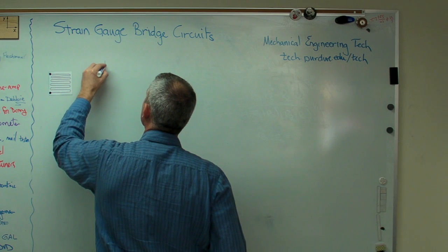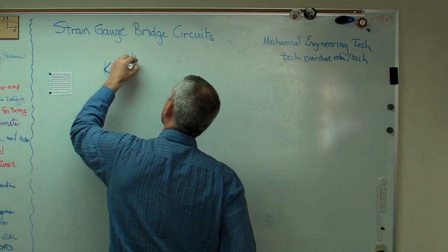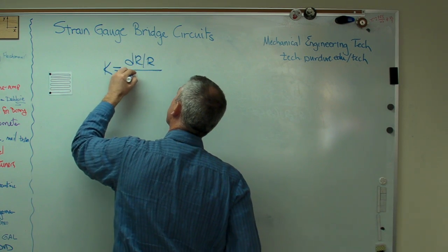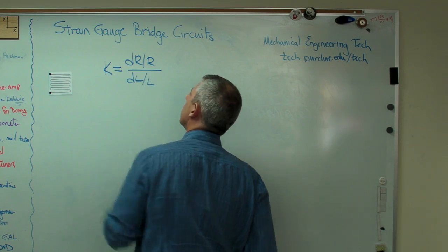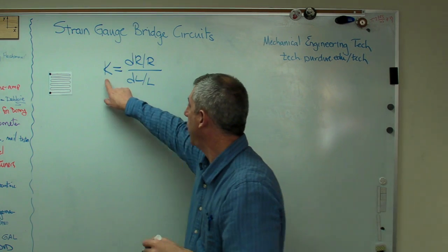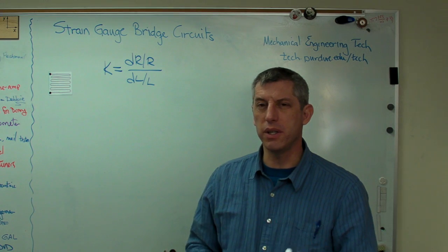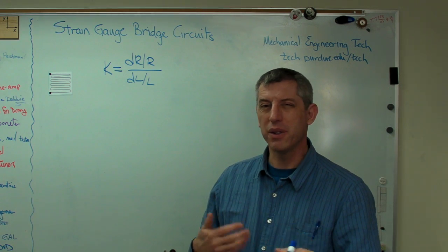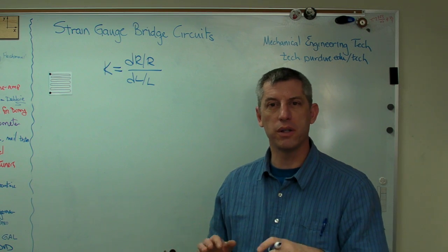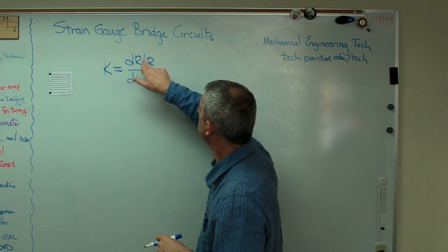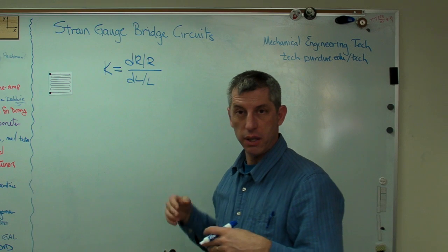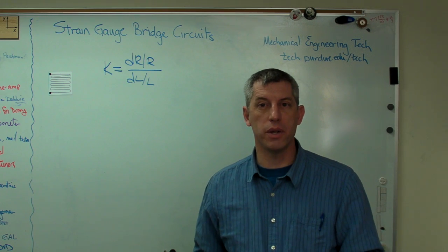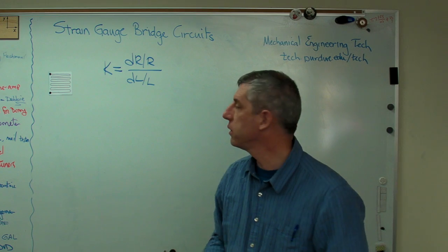The thing we learned in the last video was there's this really handy expression called gauge factor. That's K, gauge factor, and it's almost always near 2. In general, I'm going to just call it 2. It's typical to see 2.05, 2.1, something like that. Change in resistance over resistance.